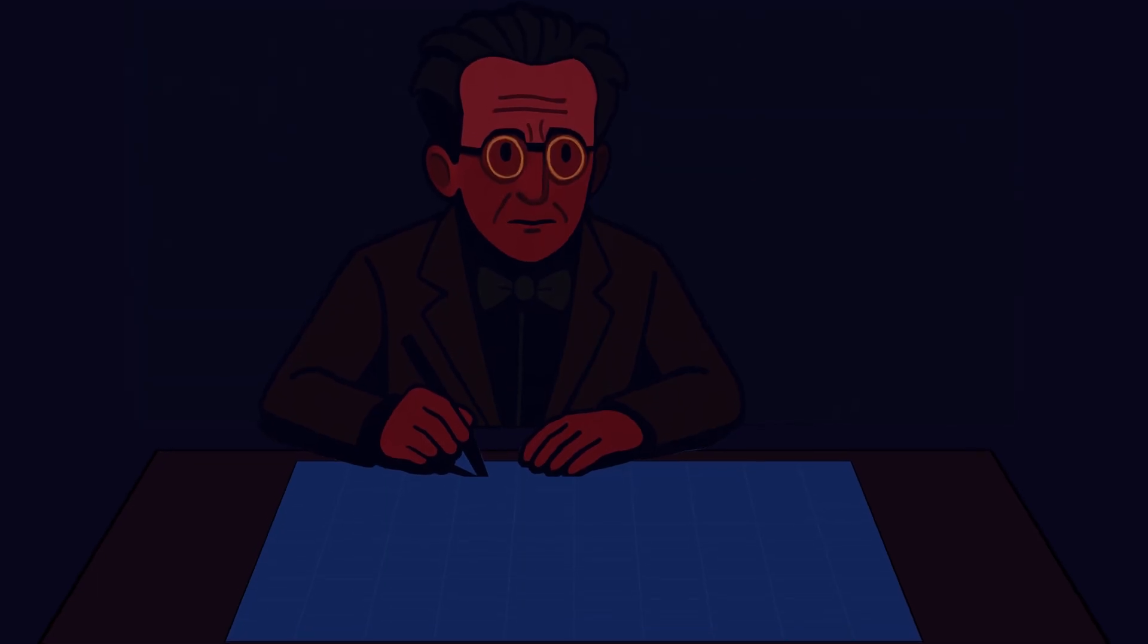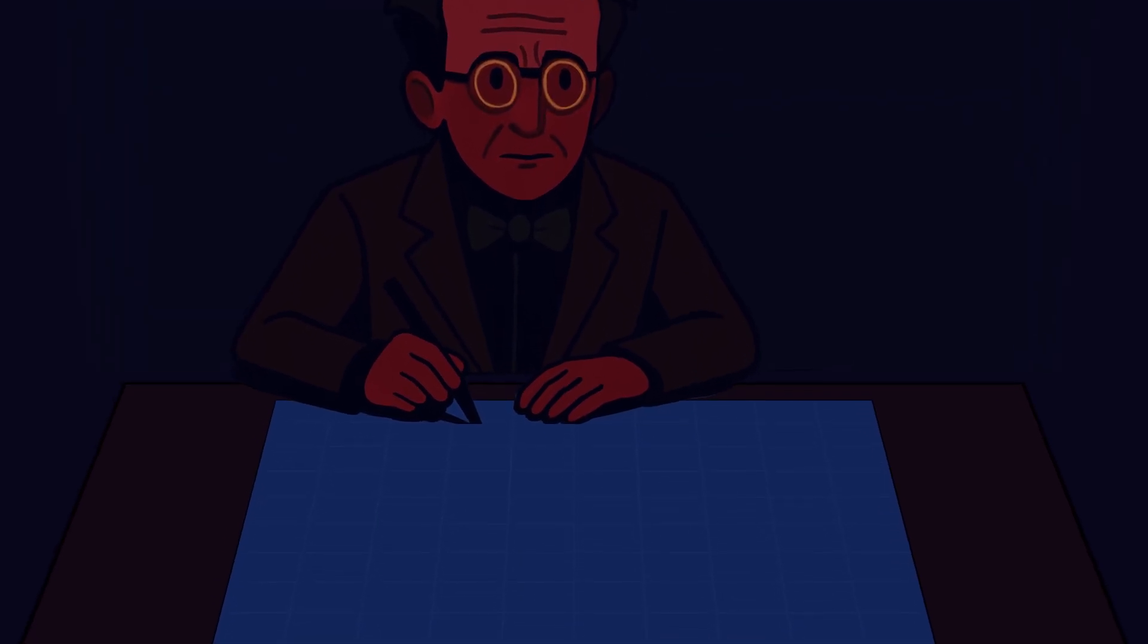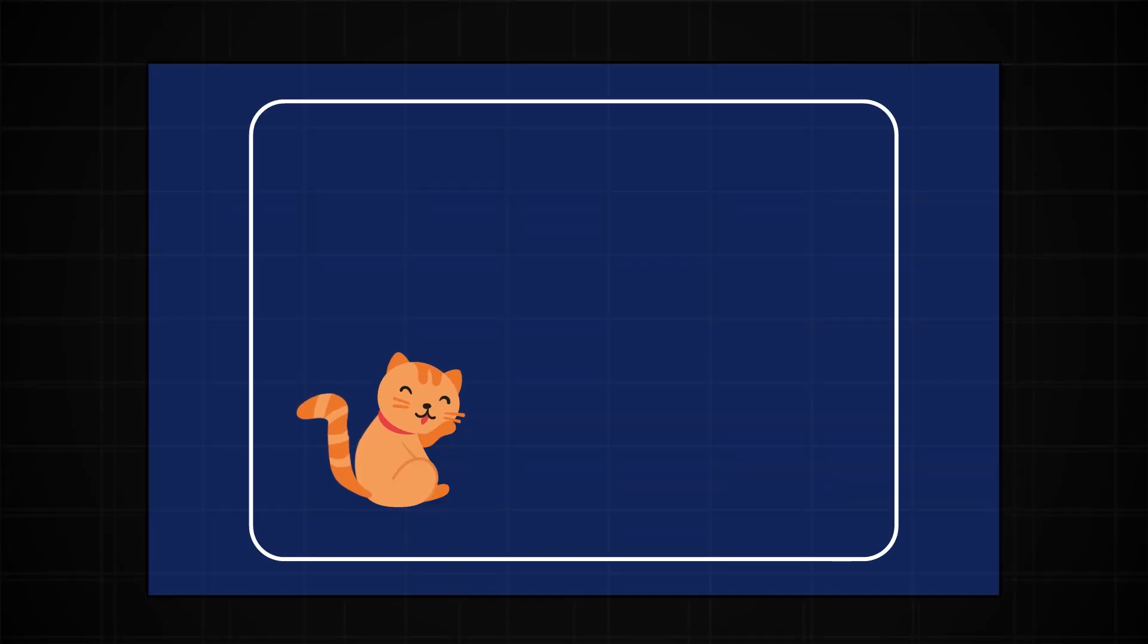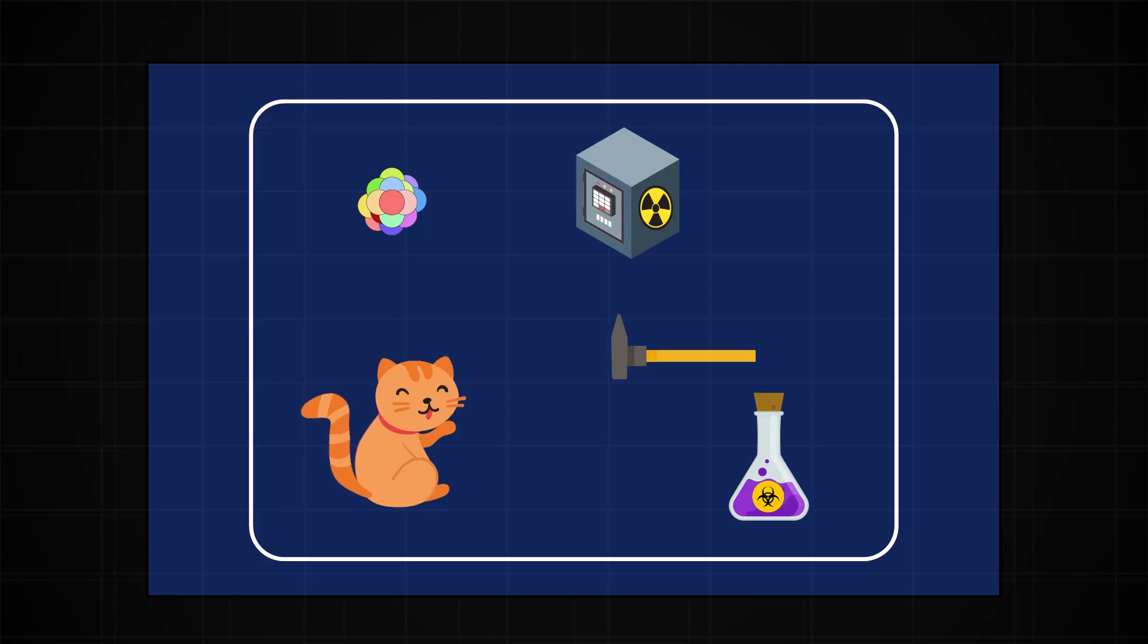Schrödinger himself hated this interpretation. In fact, he wanted to prove that quantum mechanics was wrong. That's exactly why he came up with his now-famous Schrödinger's Cat thought experiment. Here is how it goes. Imagine putting a cat in a box with a single radioactive atom. Add a radiation detector that, if triggered, releases a vial of poisonous cyanide gas. If the atom decays, the detector picks up the radiation, releases the poison, and the cat dies.